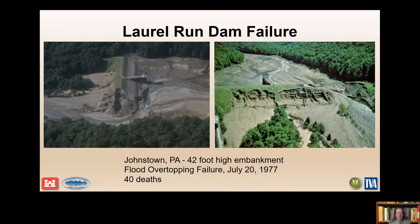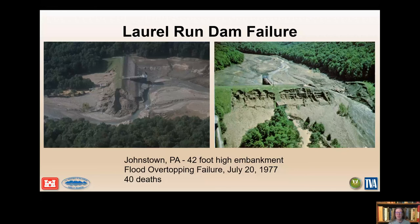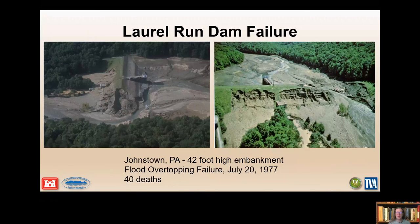Here's another big flood — Laurel Run Dam in Johnstown, Pennsylvania. It failed on July 20, 1977. The cause of failure was an inadequate spillway. It also had stability issues first identified as early as 1943. An assessment in 1959 noted the spillway was less than half the size desired by the state. It was classified as high hazard in 1970, and unfortunately no modifications were made prior to the event. Torrential rainstorms of about 12 inches in eight hours overtopped the crest of the dam.